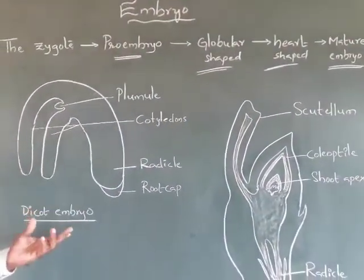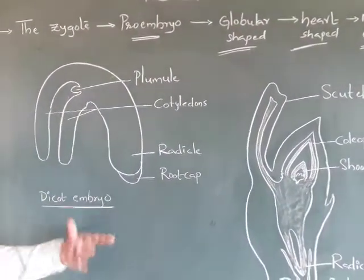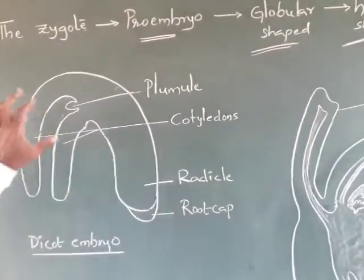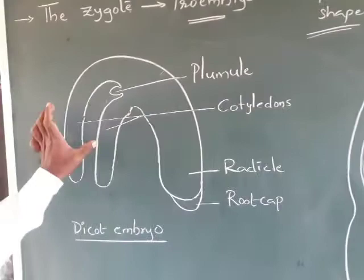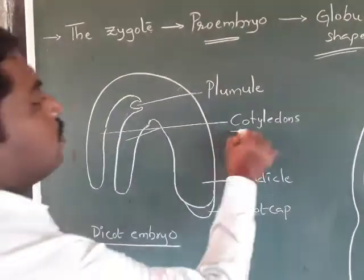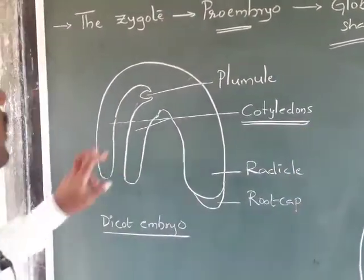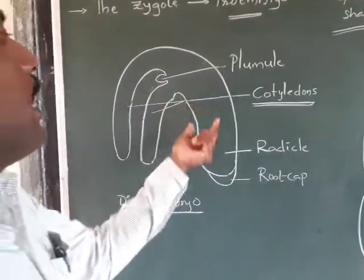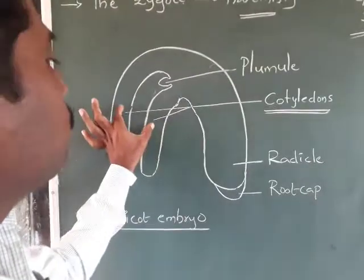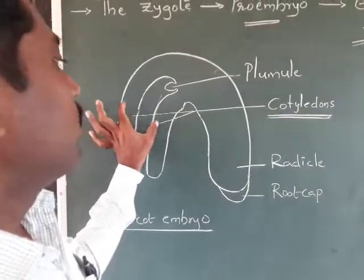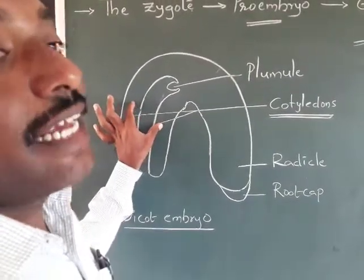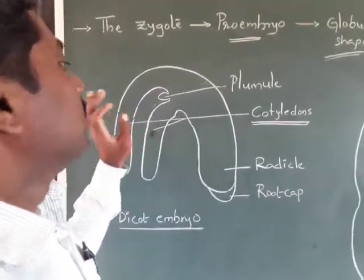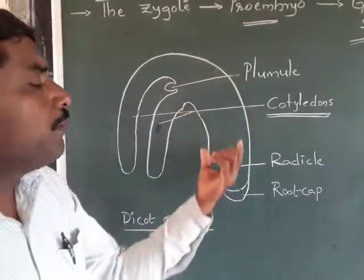Now we discuss the dicotyledonous embryo. The dicotyledonous embryo has two cotyledons. The embryonal axis contains two cotyledons — that is why we call it dicotyledonous.